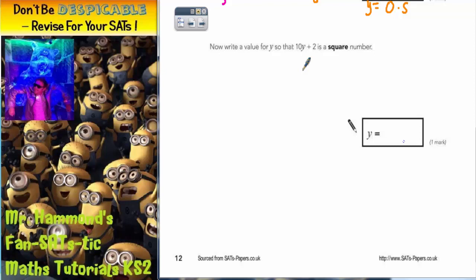It now says 10y plus 2 is a square number. Find the values of y. So we're going to use the same method again. This time the square numbers, remember 1 times 1 is 1, 2 twos are 4, 3 threes are 9, 4 fours are 16. And we could keep going with 5 fives, 6 sixes, etc. So what we need to do is choose one of these answers and make 10y plus 2 equal to that.